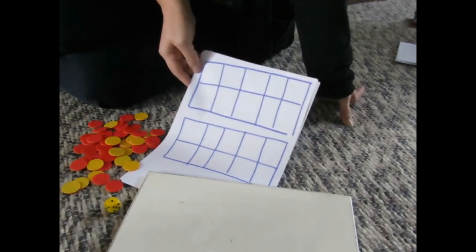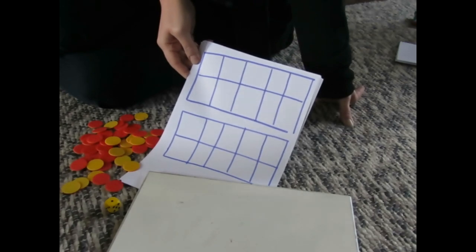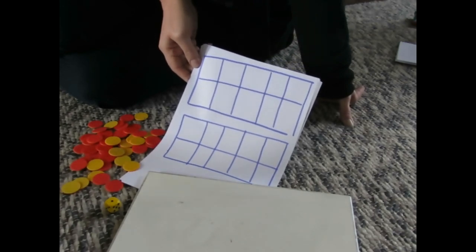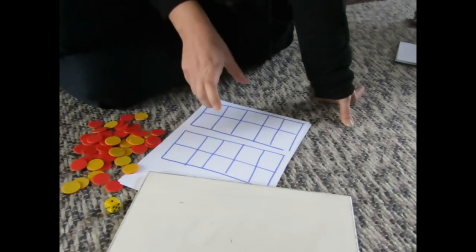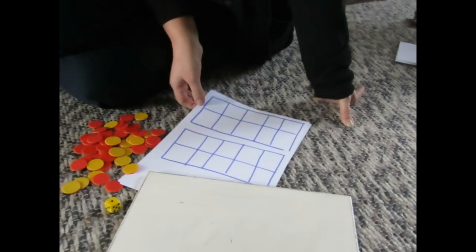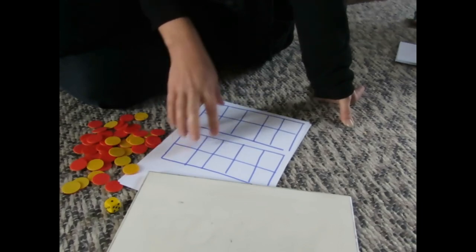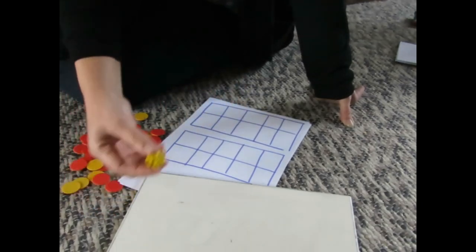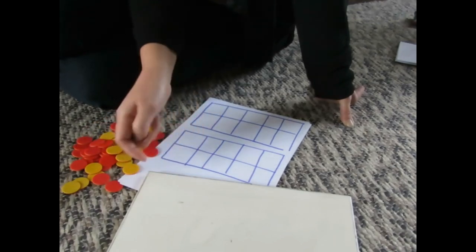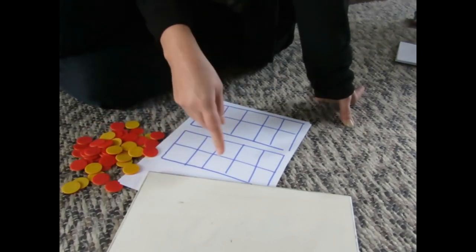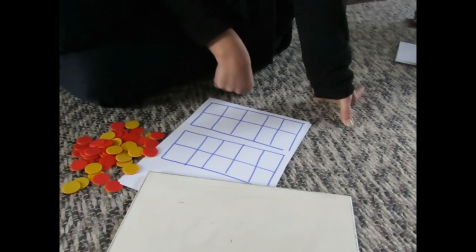You need to draw two tens frames on a piece of paper. A tens frame is a really simple little table where you have five spaces in the top row and there's two rows, and the children can see how many they've got so far. We need two of them because we're racing to 20. You need a dice and you need some counters and then you need something to record the numbers that you rolled. We've just got a little whiteboard here.